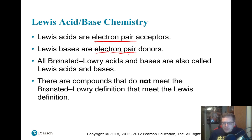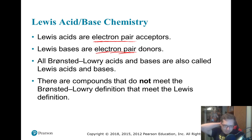In a Lewis acid, they are electron pair acceptors. In a Lewis base, they are electron pair donors. Your Lewis base is going to have an extra set of electrons that it can give away or share.